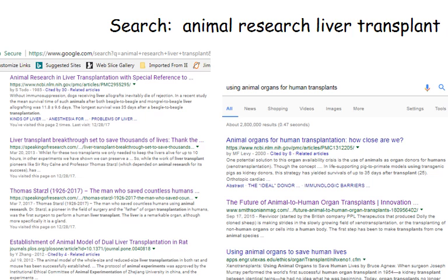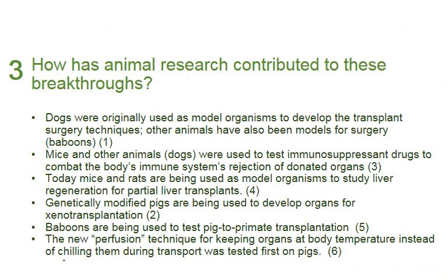So I did a search for animal research and liver transplants and came up with these sources. I've looked at about 10 sources and taken extensive notes. Now I want to sift through all those notes and identify what the main breakthroughs in transplants are that animal research has contributed to. I went through and made a list of six that I thought were important. I also numbered the sources in my notes and wrote the source number next to each bullet point so I could track where the information came from.